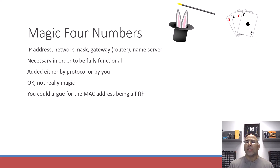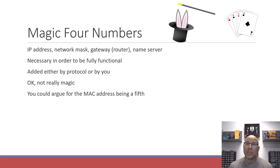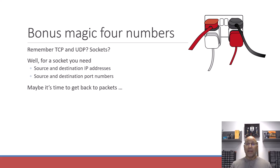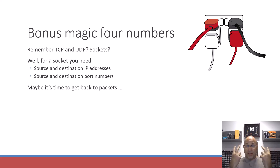You could argue for a MAC address being a fifth, but the reason it's not included is because MAC addresses of folks on other networks are never known by you, and they will never learn yours. Here's a bonus magic four numbers: remember TCP and UDP and sockets? For a socket, you need the source and destination IP address and a source and destination port number — hey, four numbers.